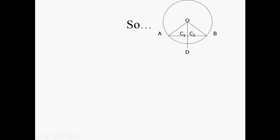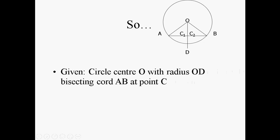Once we know all that we can start writing the formal proof and the first thing we do is we say what are we given? We are given a circle center O with radius OD bisecting chord AB at point C.